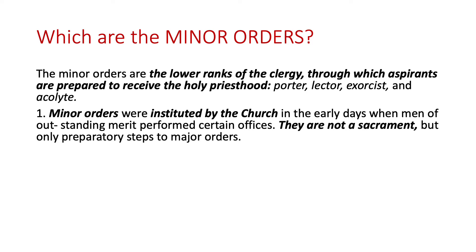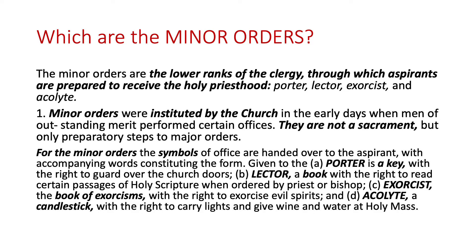For the minor orders, the symbols of office are handed over to the aspirant with accompanying words constituting the form. Given to the porter is a key, with the right to guard over the church doors. The lector receives a book, with the right to read certain passages of holy scripture when ordered by a priest or bishop.